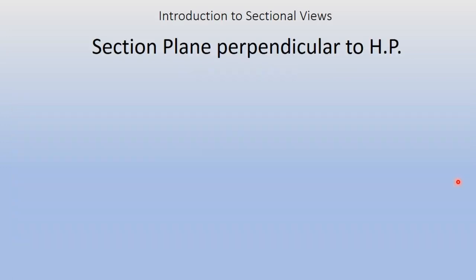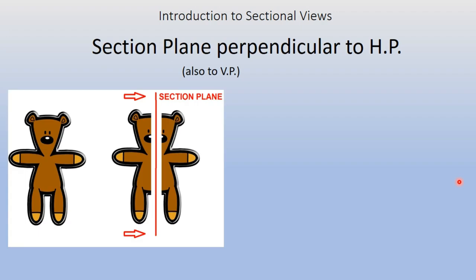Now to explain another case: the section plane perpendicular to HP. Let us also assume it is perpendicular to VP. When the section plane is perpendicular to both HP and VP, it cuts the solid as you can see here. Assuming this is the front view of the object, when you cut from the section plane, this portion has been removed.